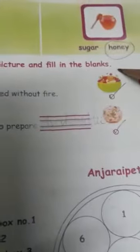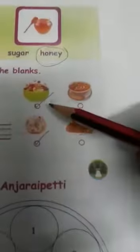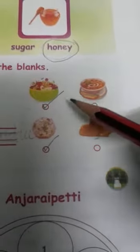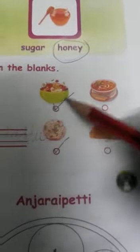Take the correct picture and fill in the blanks. Das is prepared without fire. See the image. First one, fruit salad. Second one, soup. Which one is fireless cooking? Fruit salad or soup? Yes, fruit salad. Write it. Fruit salad.